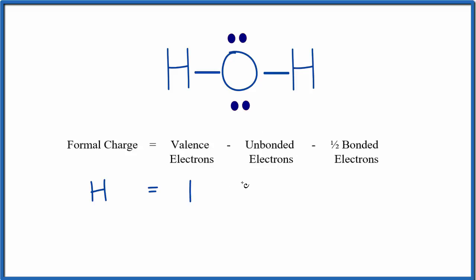And then unbonded. These are the electrons that aren't part of a chemical bond. Hydrogen doesn't have any unbonded electrons. All of its electrons, or I should say its electron, is shared here in the bond with oxygen. So we'll put a 0 there.